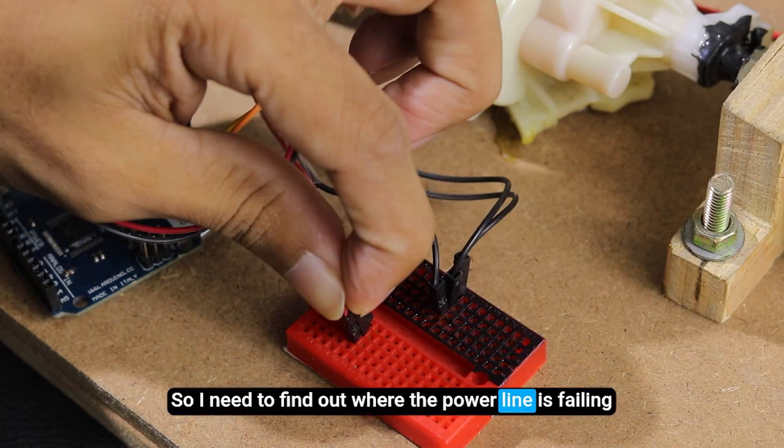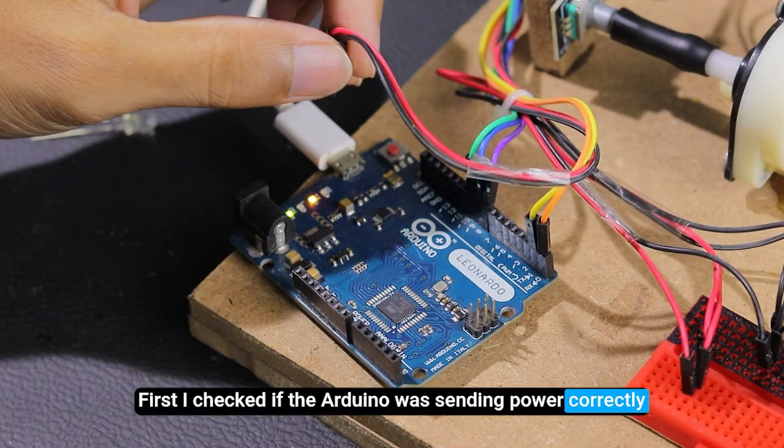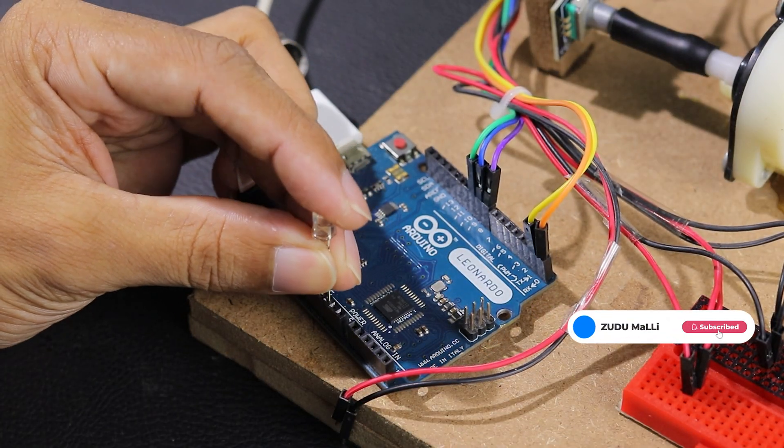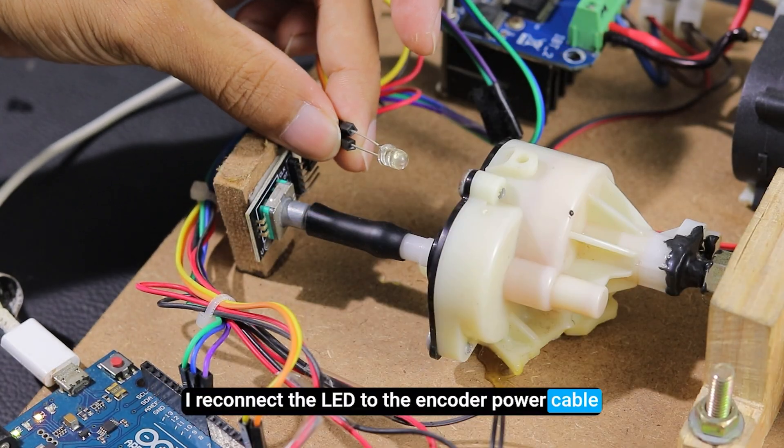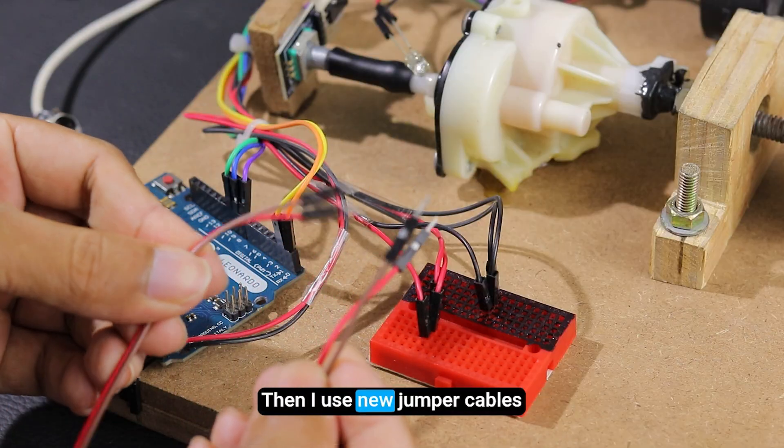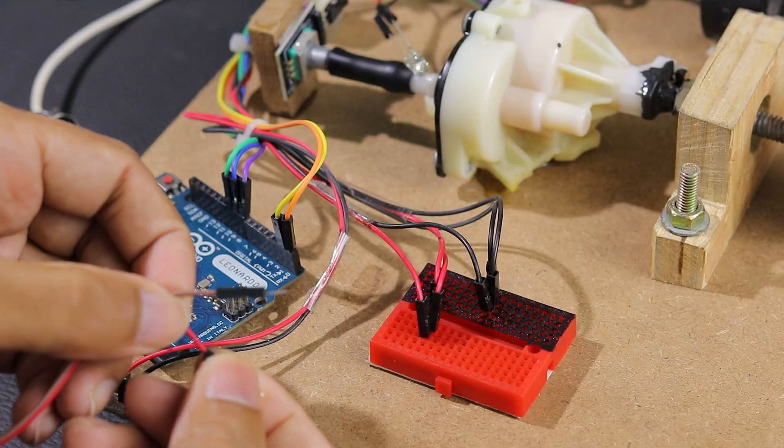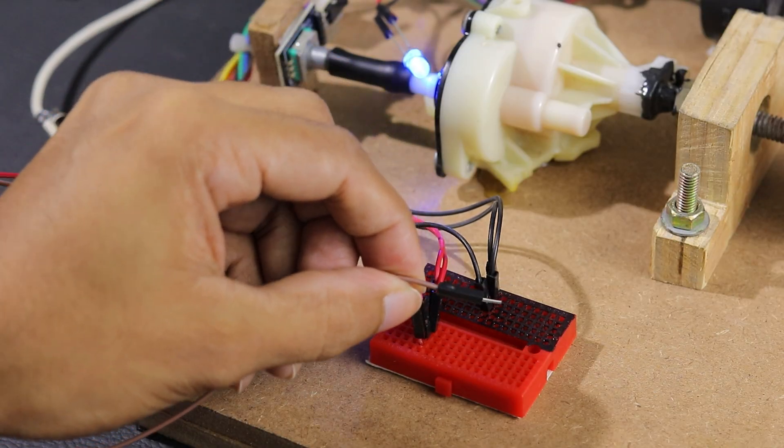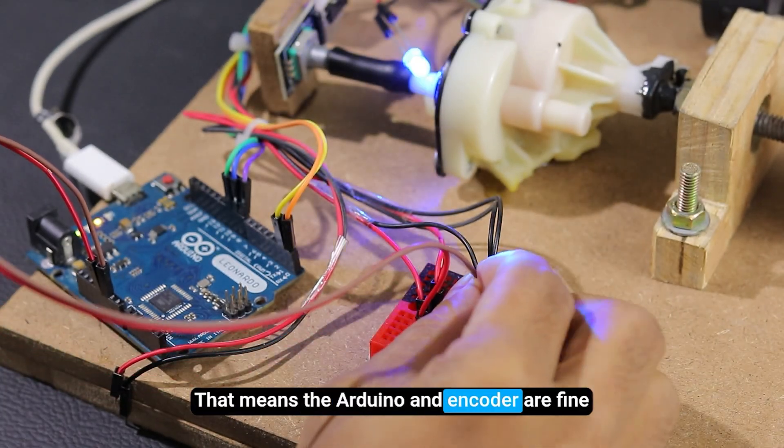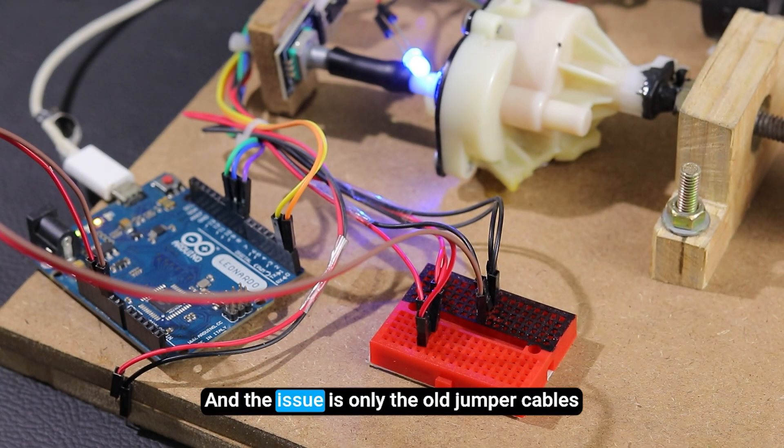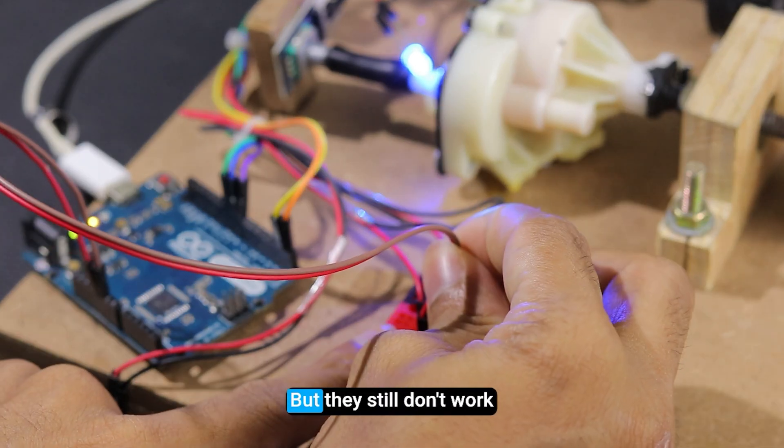So I need to find out where the power line is failing. First, I checked if the Arduino was sending power correctly. I reconnect the LED to the encoder power cable, then I used new jumper cables and plugged them into the Arduino and the breadboard. Now you can see the LED turns on. That means the Arduino and encoder are fine, and the issue is only the old jumper cables. There's no visible damage on the jumper wires, but they still don't work.